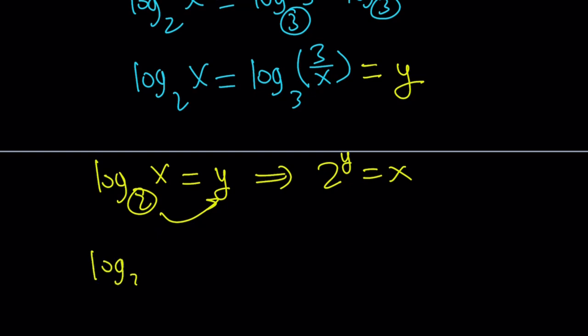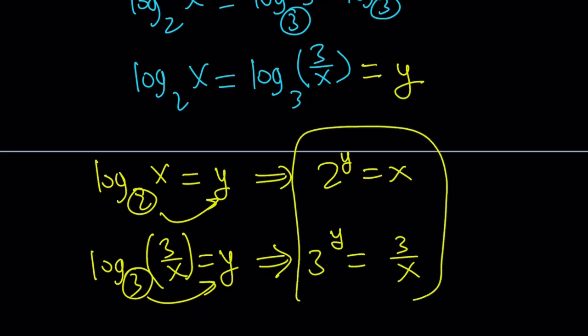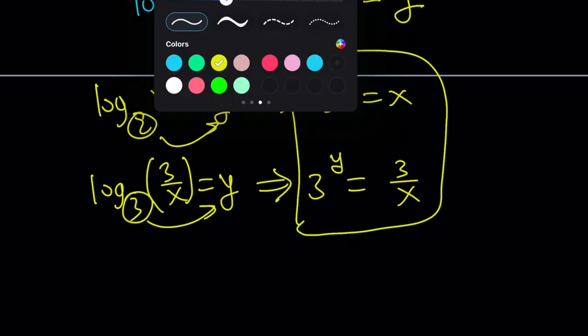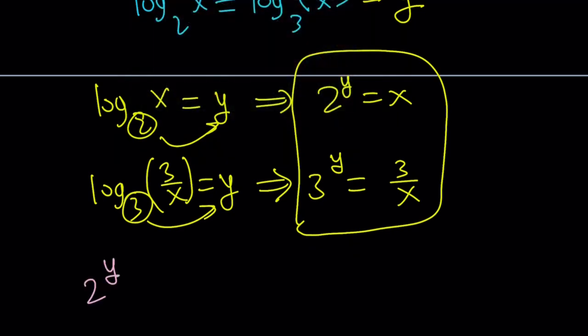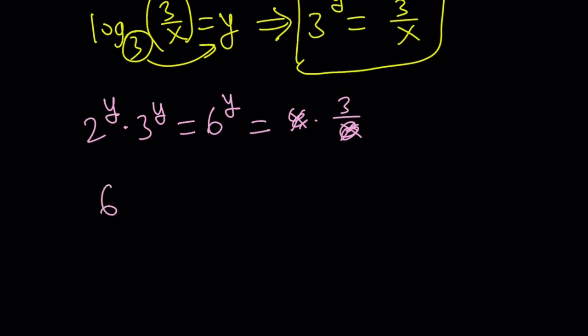And then use the second equation. Notice that I'm dealing with them separately, so that gives me a system of equations. This gives me, since 3 is the base, 3 to the power y equals 3 over x. Now this may look like a difficult system, but if you look carefully, x and 3 over x are going to cancel out when multiplied. So multiply those two expressions. 2 to the power y multiplied by 3 to the power y is 6 to the power y, but it's also x times 3 over x. They cancel out, leaving us with 6 to the power y equals 3.